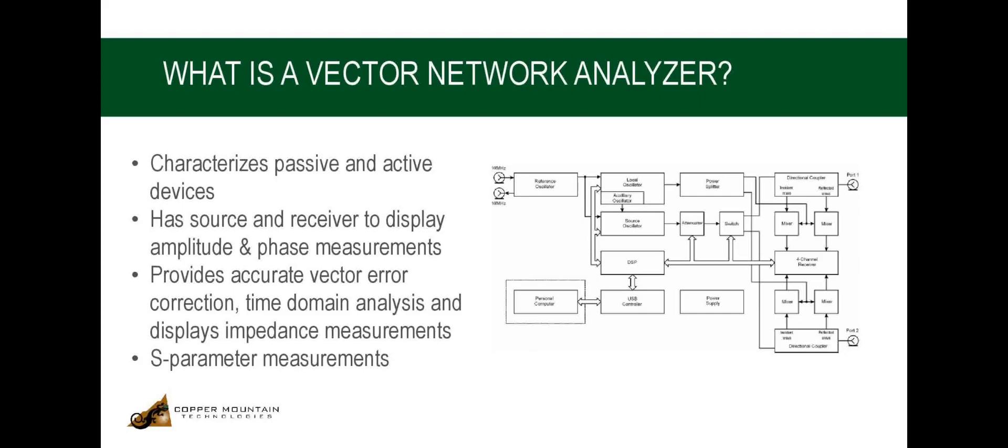Either port of the analyzer can be a source of the tested signal as well as a receiver of the signal transferred through the DUT. This combination of directional couplers, mixers, and a four-channel receiver forms four similar signal receivers, that is, two reference receivers and two measurement receivers for this two-port VNA.